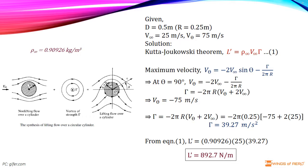Now, we have V_θ is minus 75 meter per second. Substitute this V_θ and V∞ value to find Γ. Then, Γ is 39.27 meter square per second.